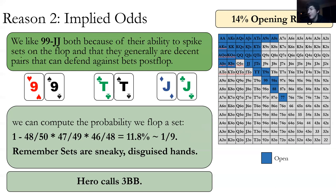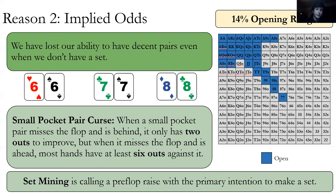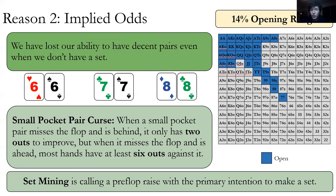Looking at under the gun's range, if we have nines, we can give aces, kings, ace-king a very bad day when we flop a set and they make a pair. Now looking at lower pocket pairs — sixes, sevens, and eights — we've now lost our ability to have decent pairs when we miss the set. Pocket eights could be top pair sometimes, but here's the problem with some of these weaker middling pairs: the small pocket pair curse.